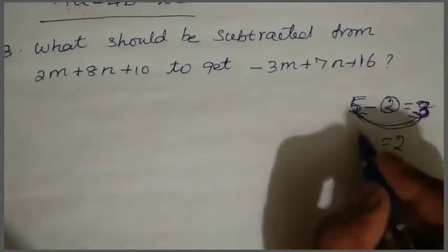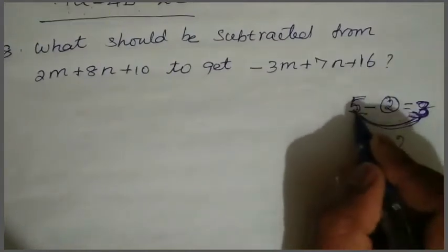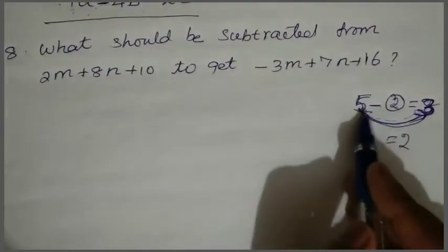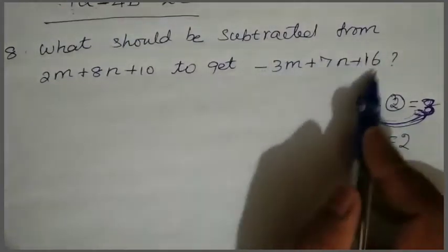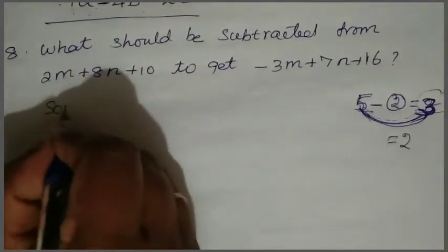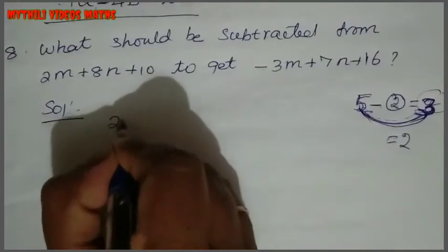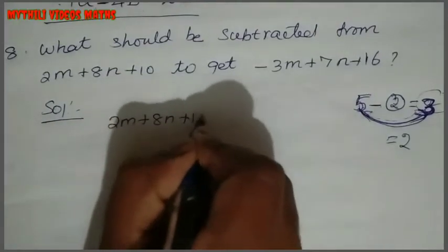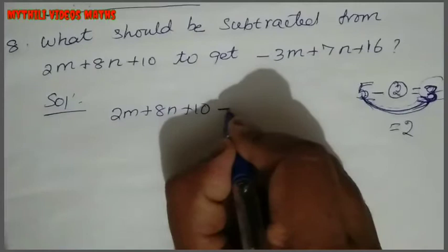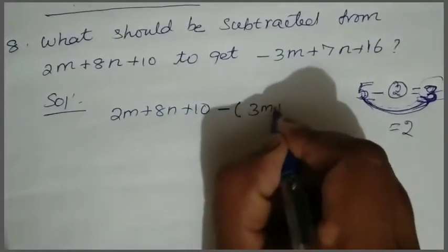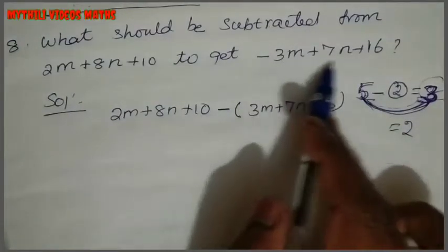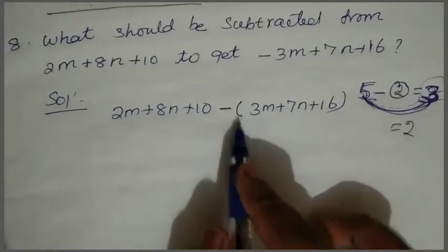So if you have a number of 5, you will subtract to get the answer. If we do first minus last: so 2m plus 8n plus 10, subtract — we do it minus, minus, minus.